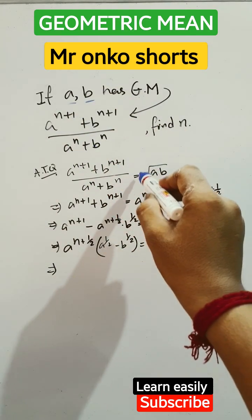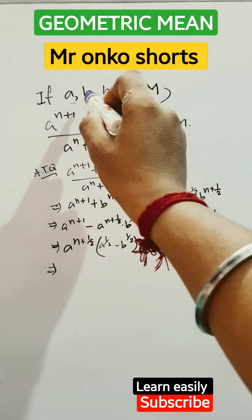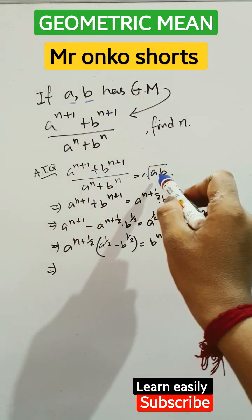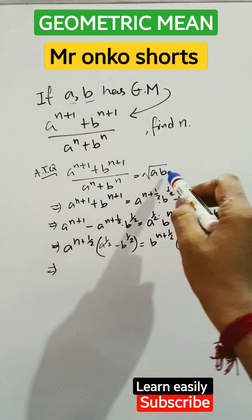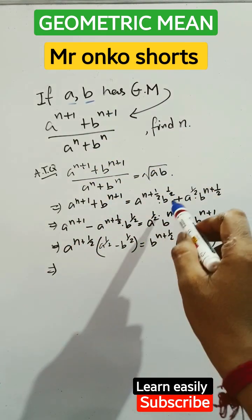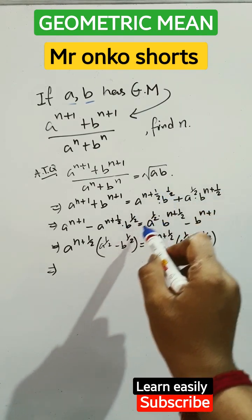Then we can easily say that this part is the GM of a and b. Now this is also GM, so this equals to this. Finally, cross multiplication here. Now side change, we have brought this part into here.